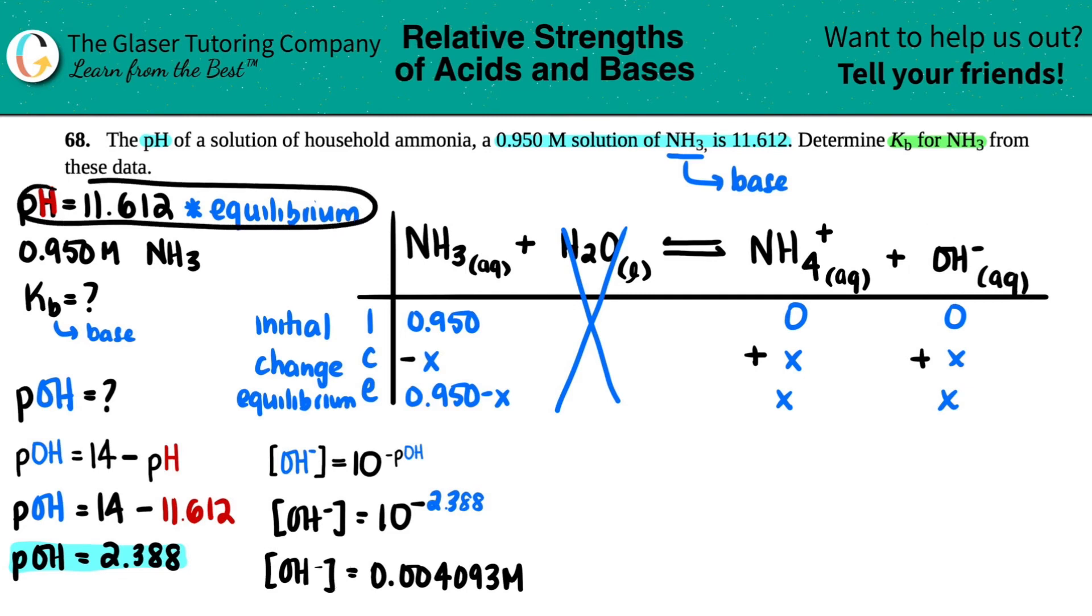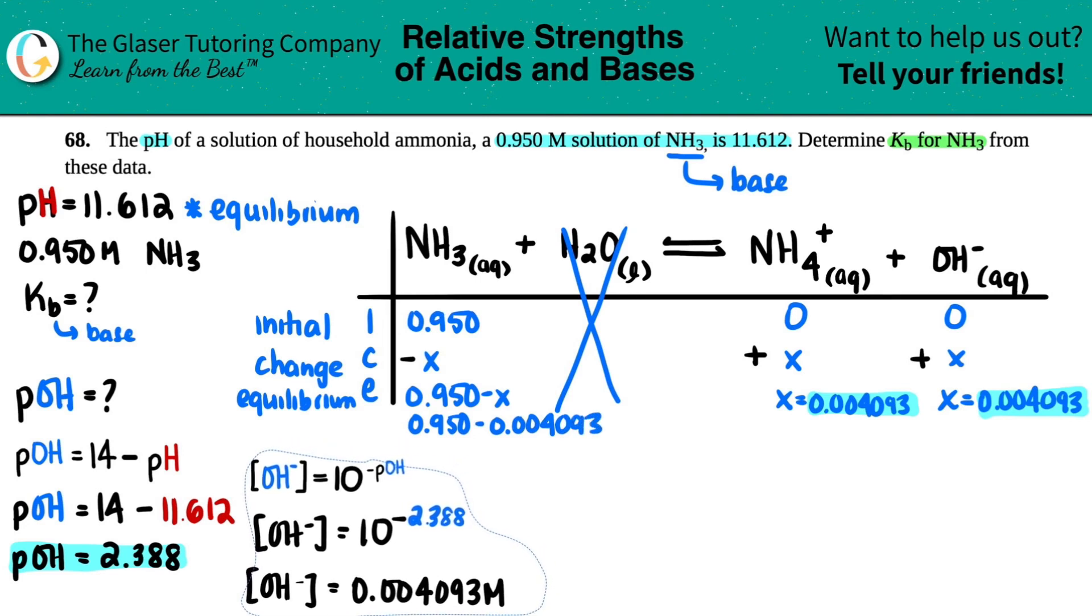And now we have our OH concentration. And if this was at equilibrium, the pH, the POH is at equilibrium, and then the OH is at equilibrium. So this X value is really 0.004093. And if this was X, this is X, it's the same number. So I now know that number. And now I know what X is for here. So this would be 0.950 minus 0.004093. So let's just bring this down a little bit just to have the room. And now let's see what that new equilibrium concentration is. So 0.950 minus 0.004093.